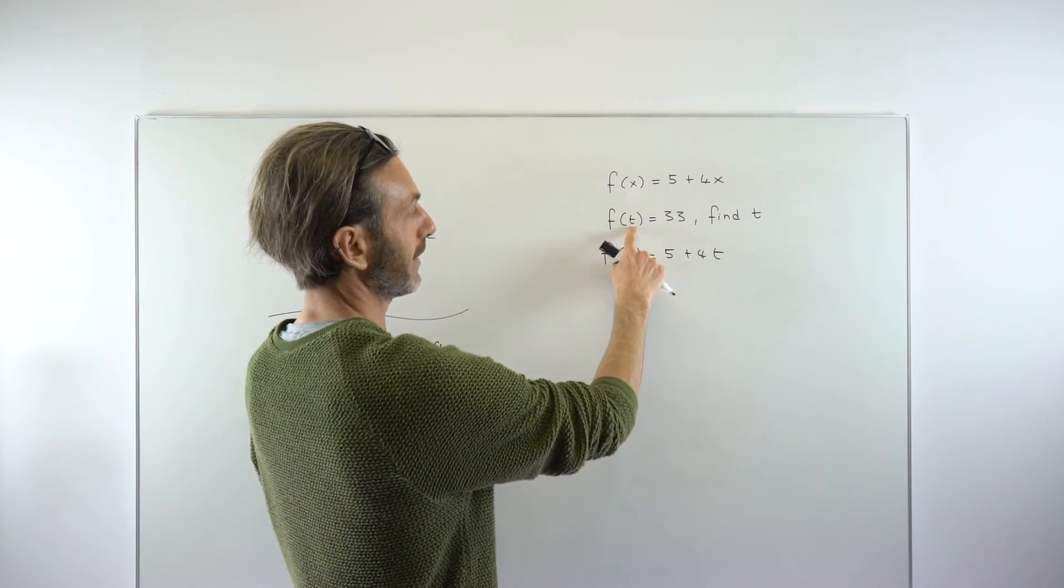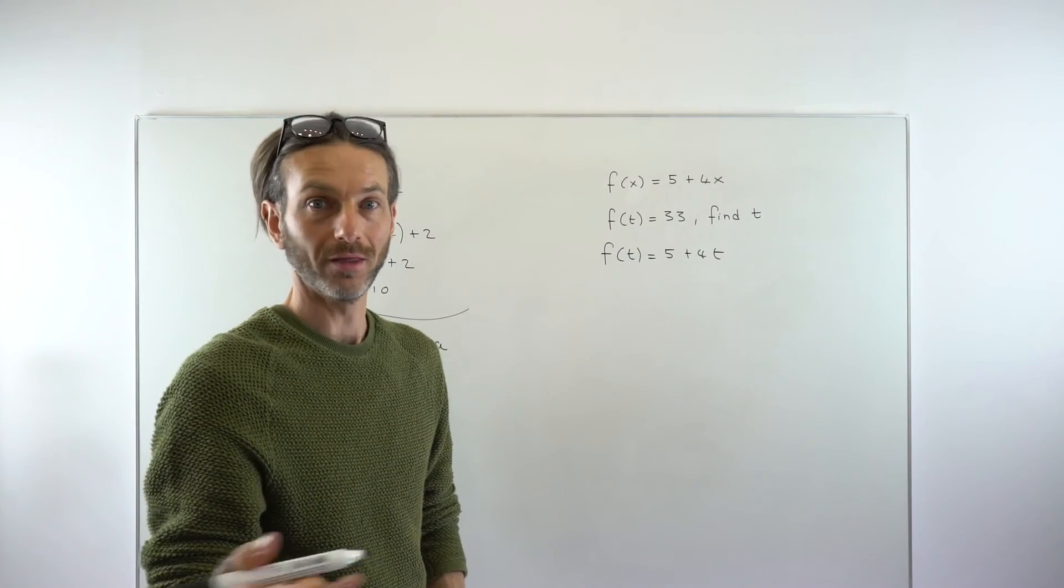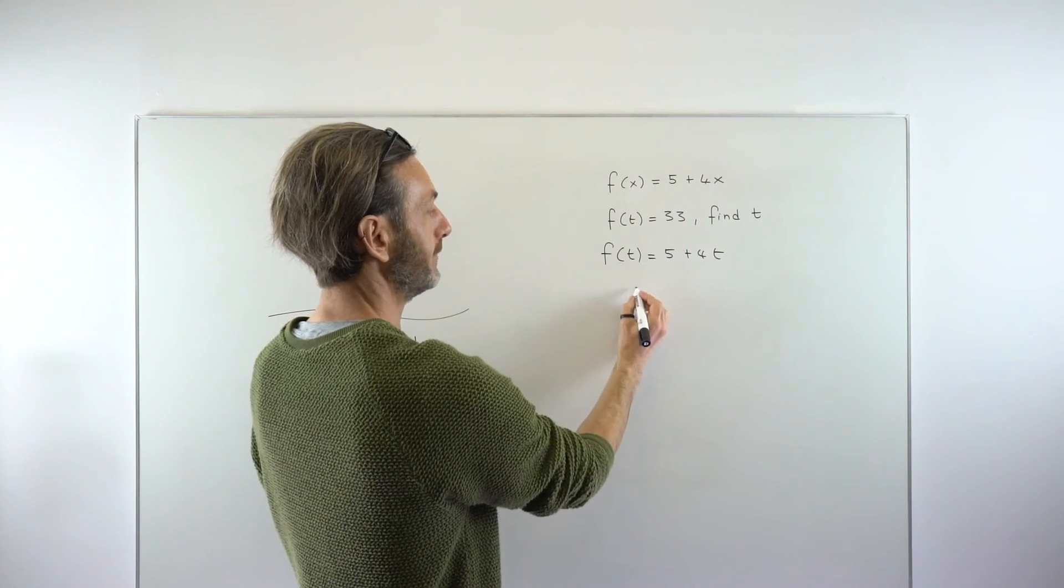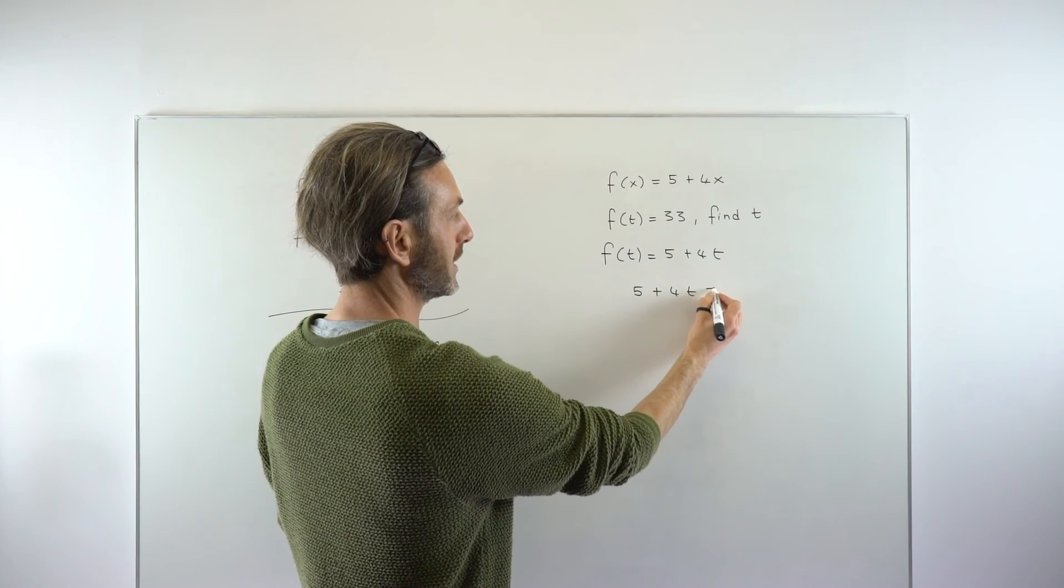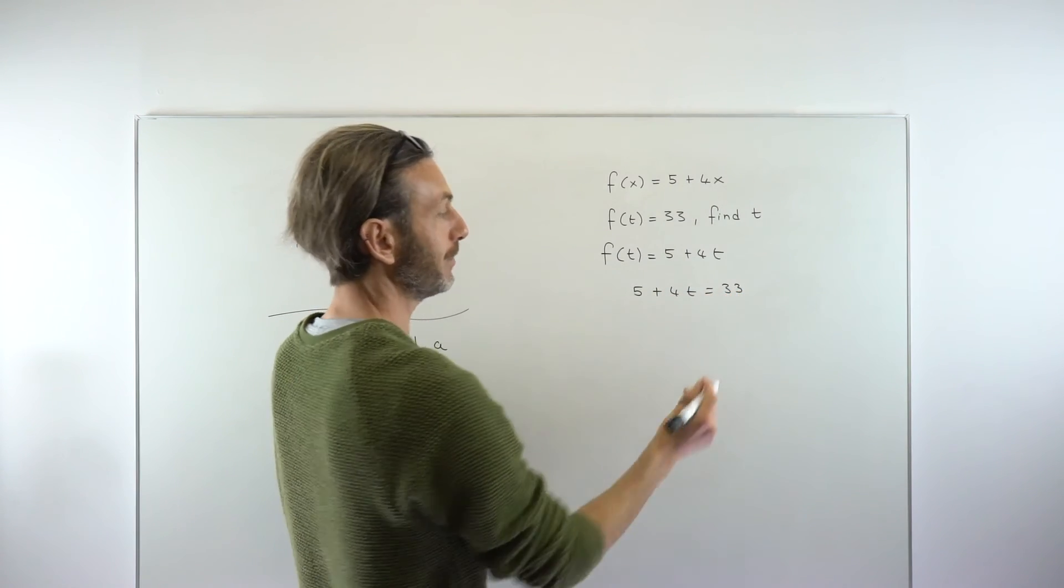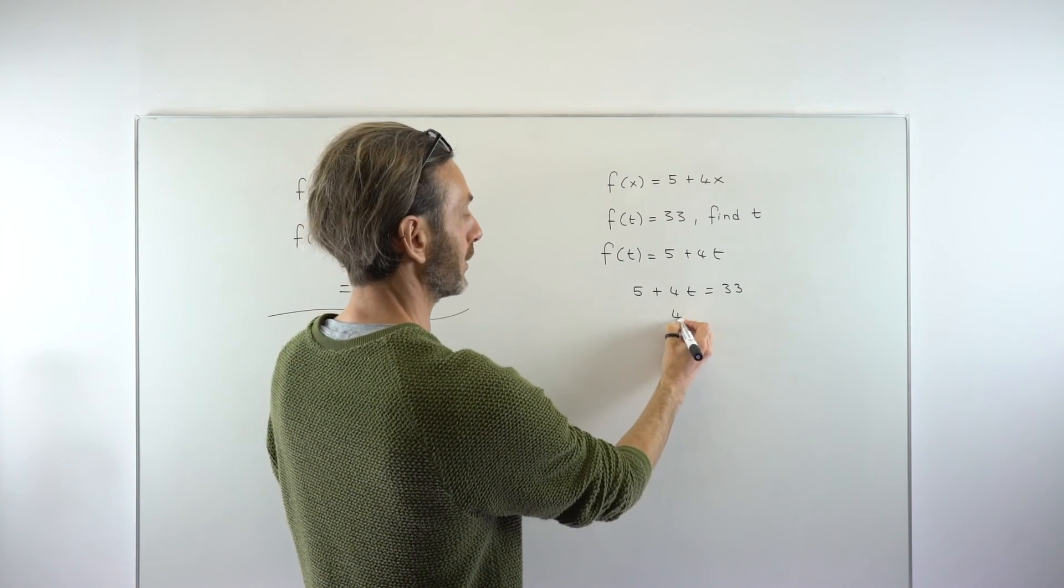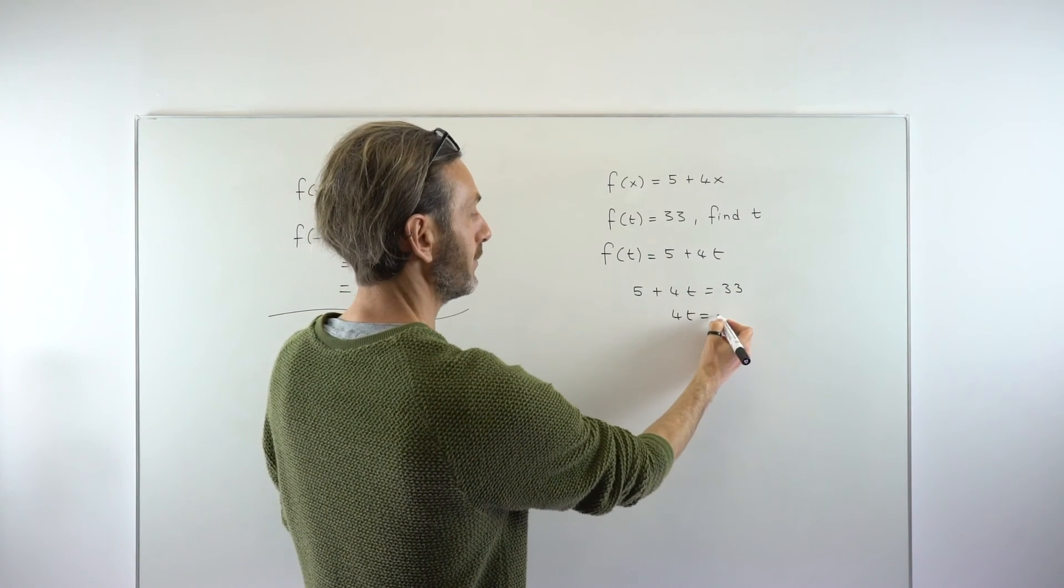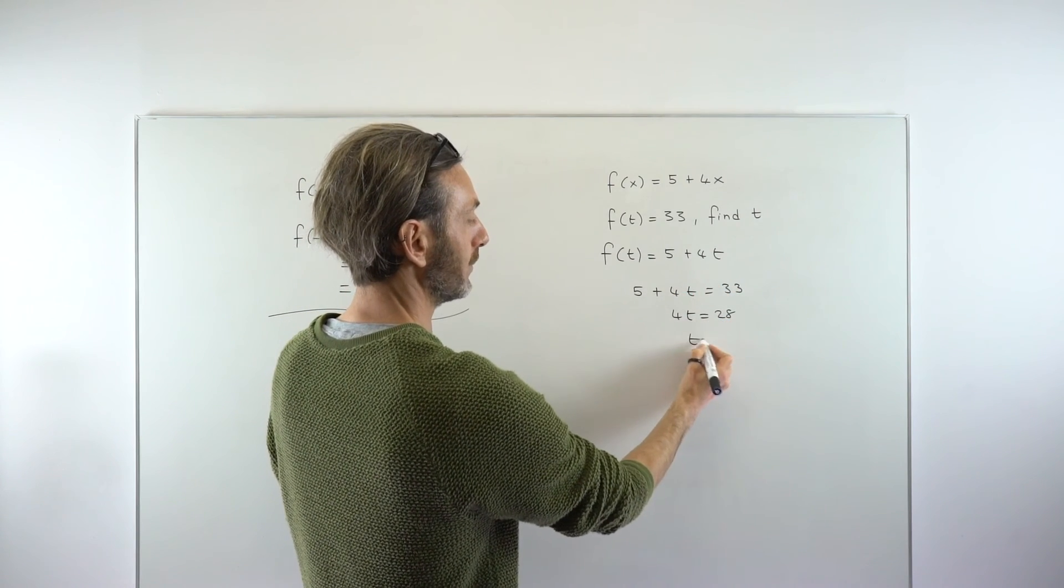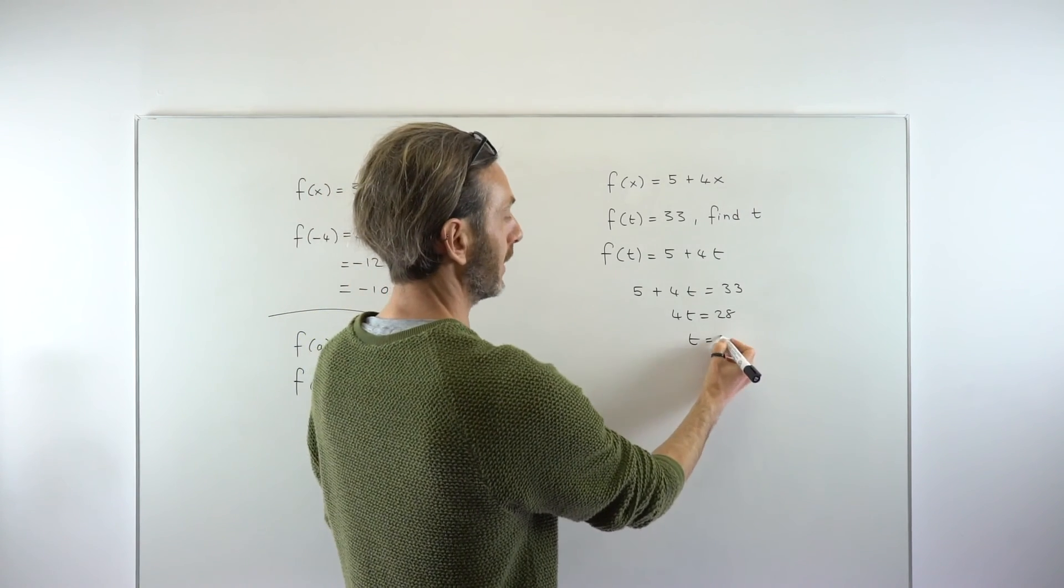But numerically, f of t is 33. But they're both f of t, so they have to be the same thing. They have to be equal. So that is equal to that. So again, we're just making a little equation. 5 plus 4t equals 33. At that point, it's got nothing to do now with functions. It's just an equation to solve. That would give us 4t equals 33 minus 5, which is 28. And just dividing both sides by 4, just like a normal equation, to get our final answer of 7.